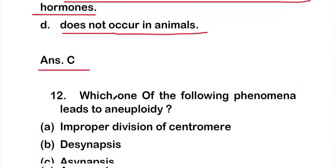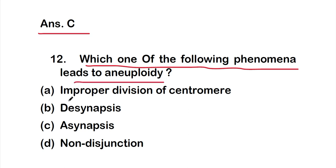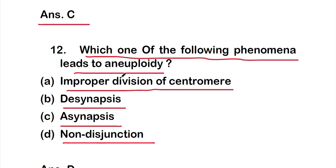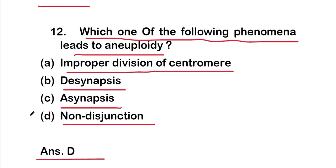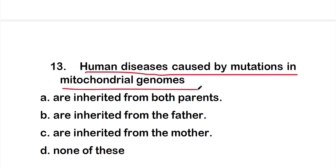Question twelve: which phenomenon leads to aneuploidy? Options: A: improper division of centromere, B: desynapsis, C: asynapsis, or D: non-disjunction. The right answer is option D, non-disjunction.